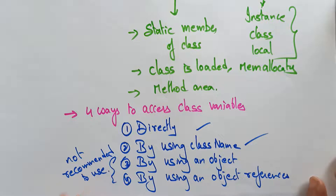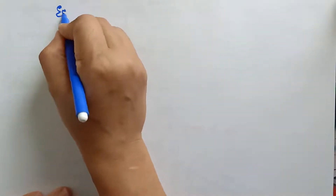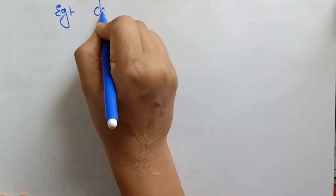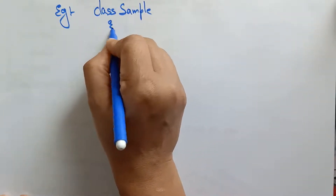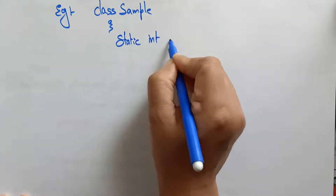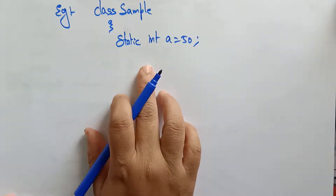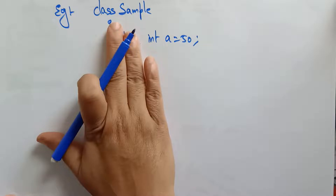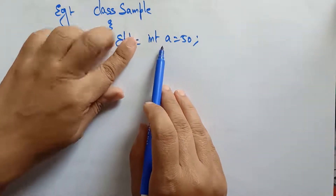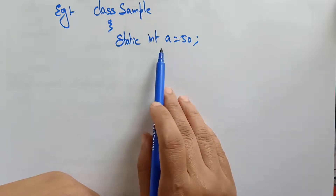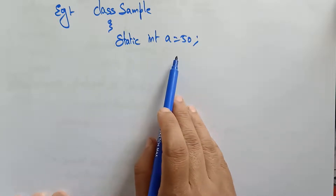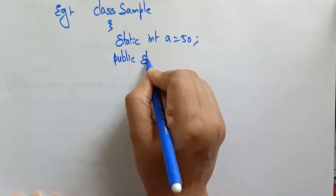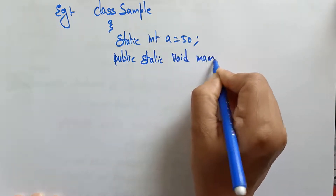If you want to access a class variable, either go directly or by using the class name. Let me take a simple example. Class name is 'Sample'. Inside: static int a = 50. This is a class variable because it is declared with the static keyword. If static is not present, it would be an instance variable.